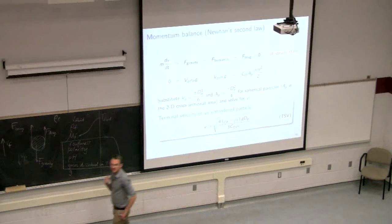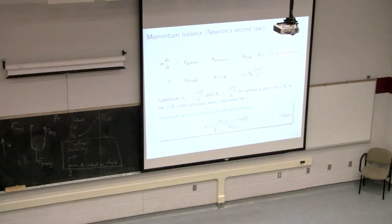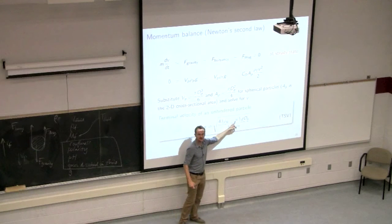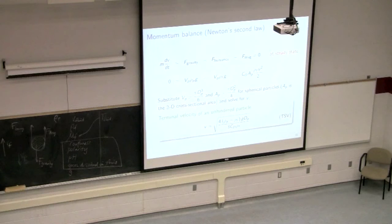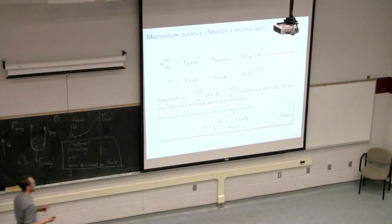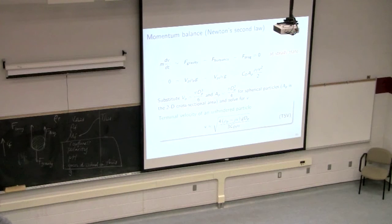If your boss says settling is too slow, you can change the fluid to one that is less dense to increase the density difference, or change the viscosity — though viscosity doesn't appear directly in the simplified equation, it enters through the drag coefficient and Reynolds number. These equations are powerful for process optimization: look at the equation first to see how to improve the existing system before jumping to full redesign.